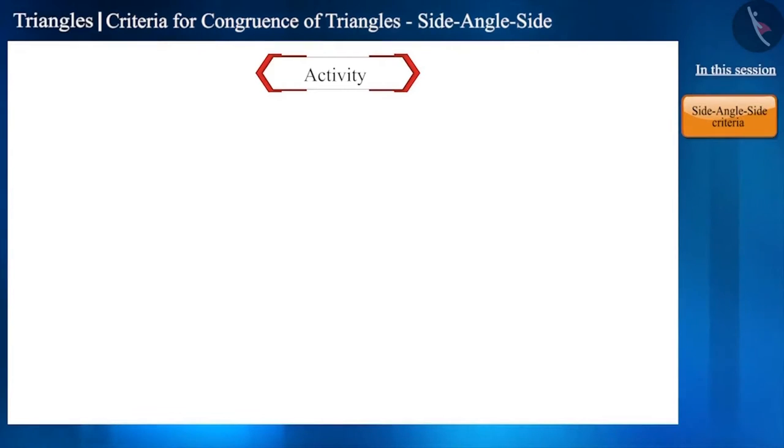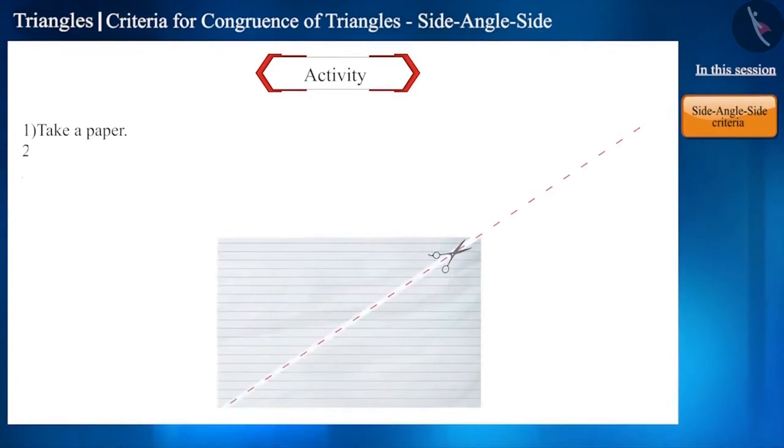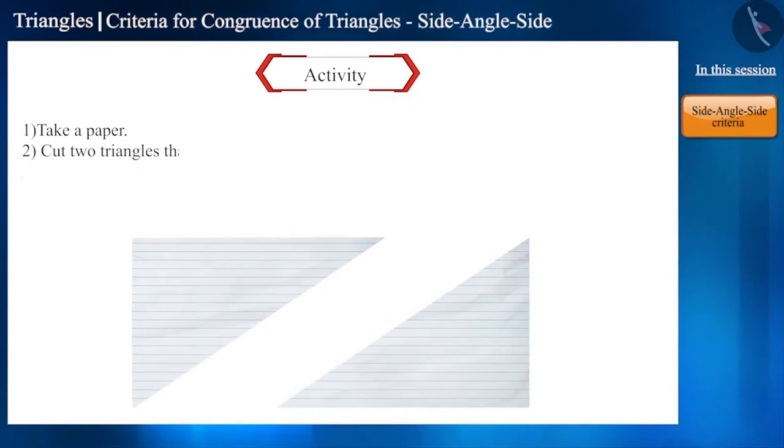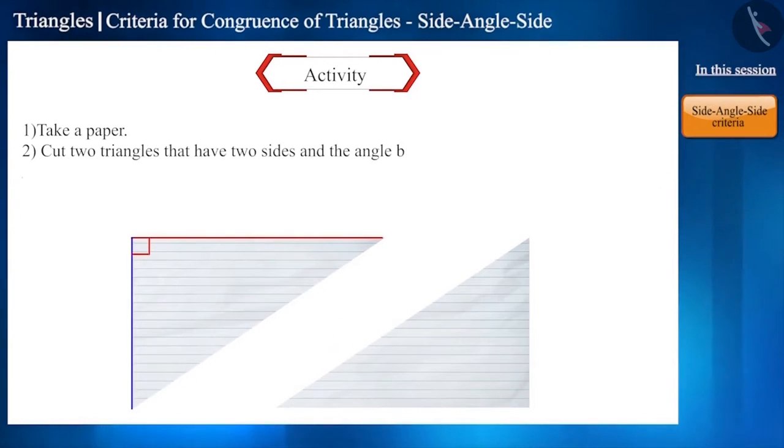Why don't you do an activity? Cut two triangles from a paper in such a way that the two sides and the included angle of one triangle are equal to the two sides and the included angle of the other triangle.